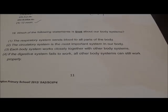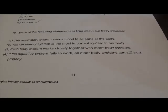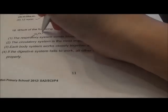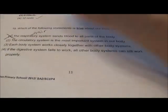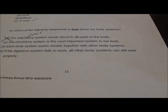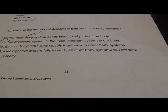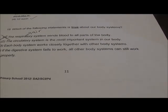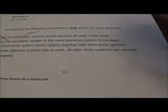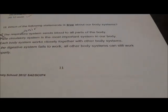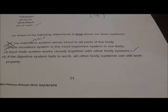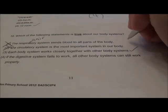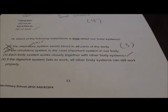Question 19: Which statement is true about our body systems? The respiratory system is about air, not sending blood — wrong. The circulatory system is the most important — every system is important, there's no such thing as most important — wrong. Each body system works closely with each other — definitely true; you need each system working closely before your body can function. Question 19, answer is 3.